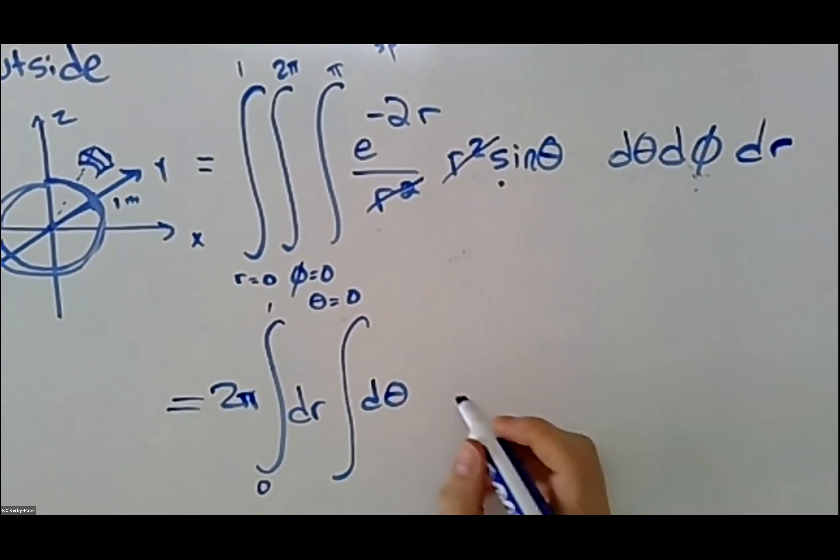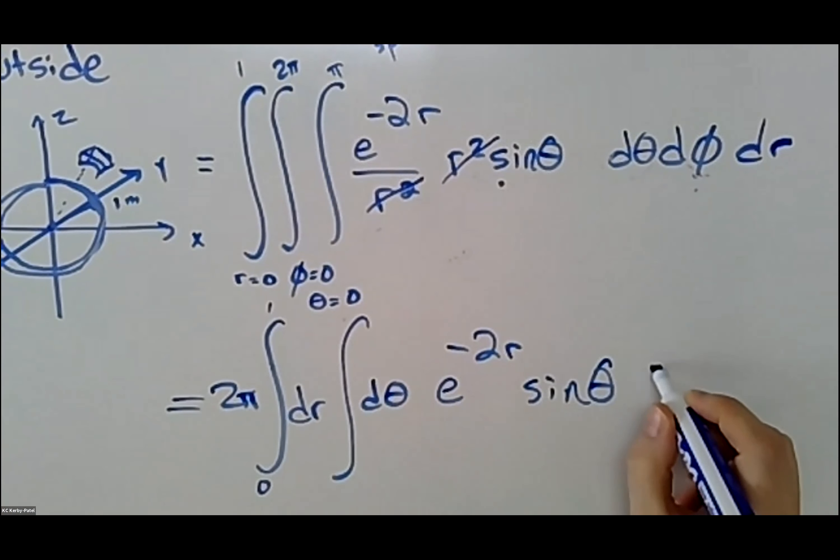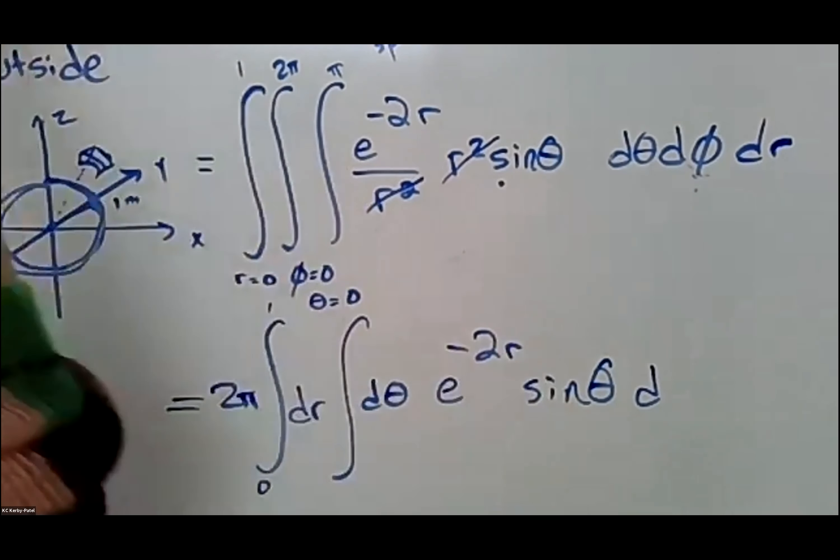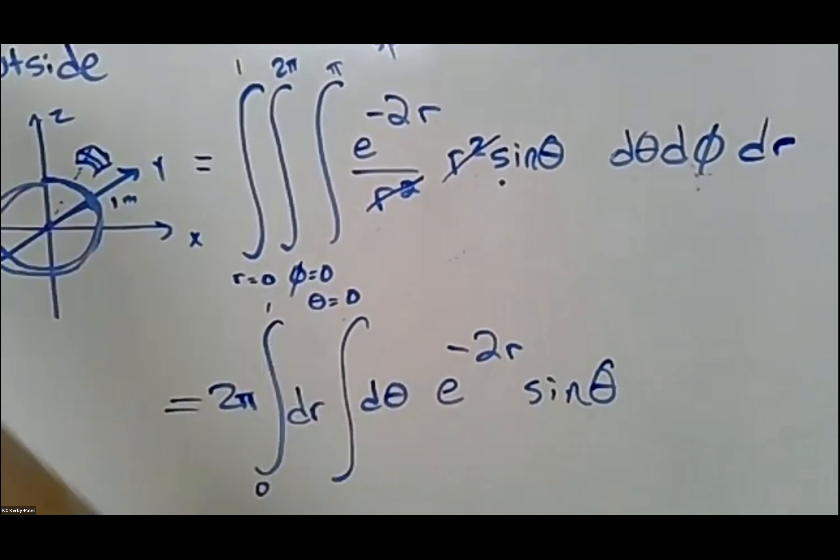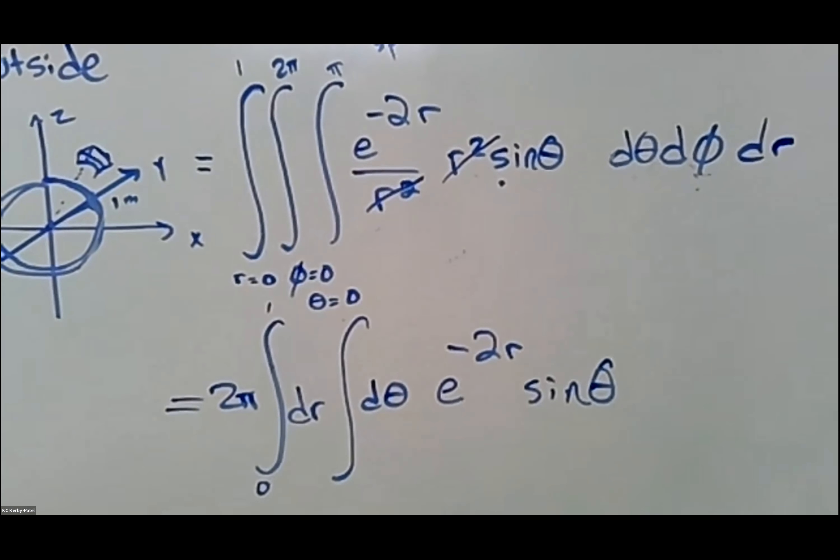Now I can write the rest of the stuff: e^(-2r) sin(θ). We don't have to do the dθ and dr because they're already before everything else.